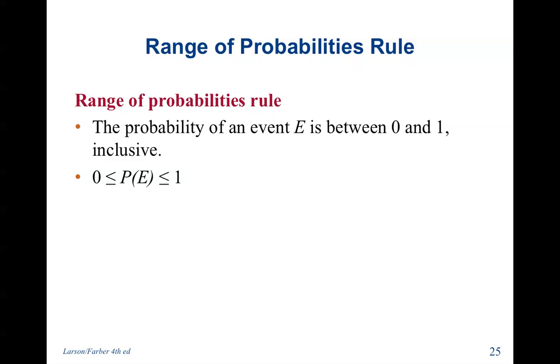Range of probabilities rule. The probability of event E is between 0 and 1, inclusive. You can't have any probability that is less than 0. You can have 0 probability like the one we discussed earlier about getting a 7 on a dice. That is impossible, so 0 probability. And you can get a 1. You can get the number that you wanted on the dice. So impossible, unlikely, even chance, likely, and certain is how that would range from 0 to 1.